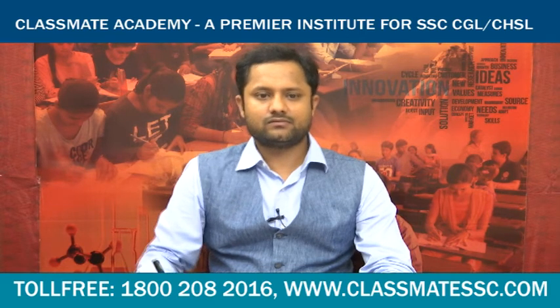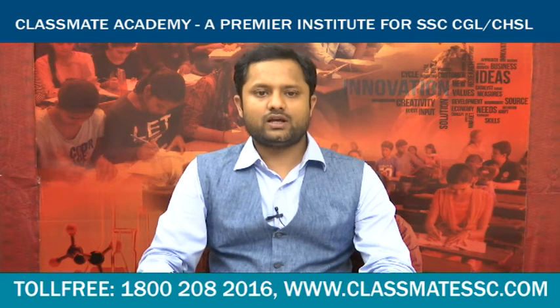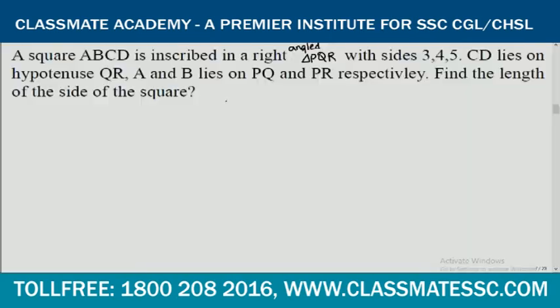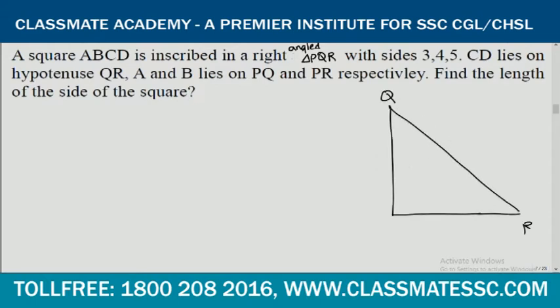First question: a square ABCD is inscribed in a right angle triangle PQR with sides 3, 4, 5. CD lies on hypotenuse QR, therefore the triangle PQR will be oriented so that P is the right angle vertex.